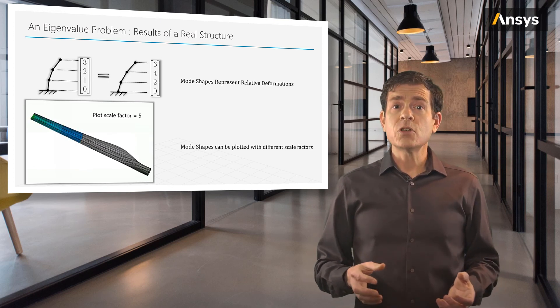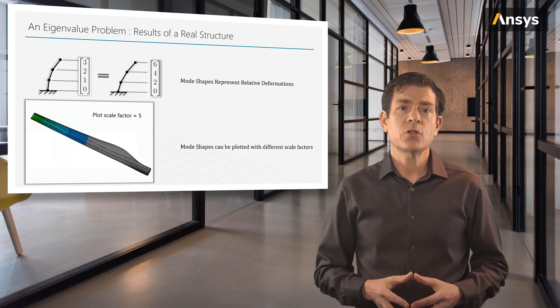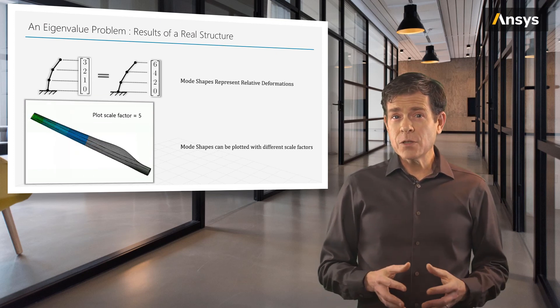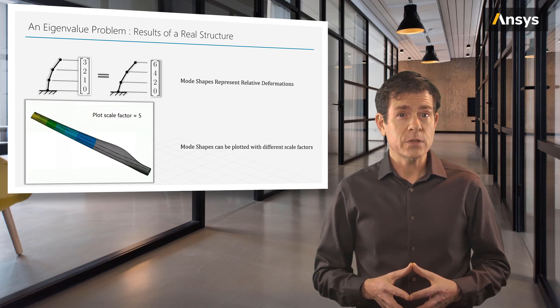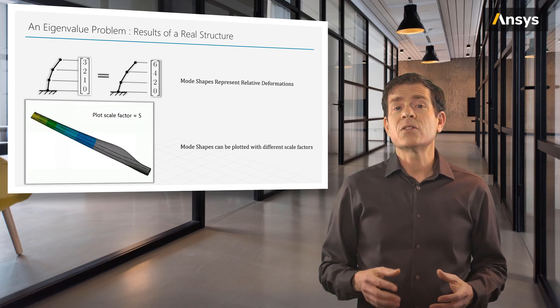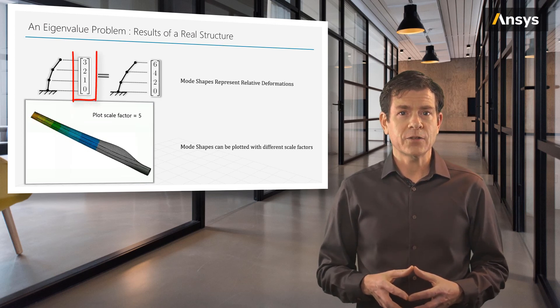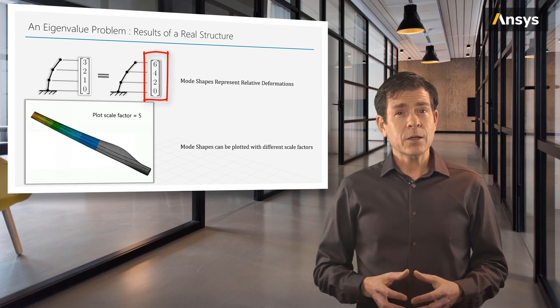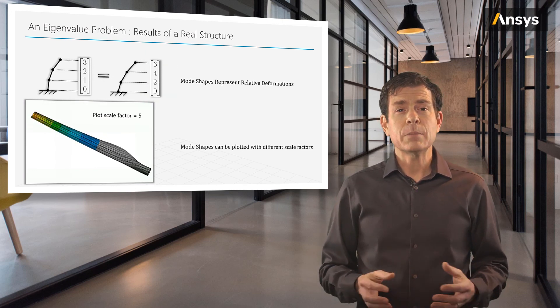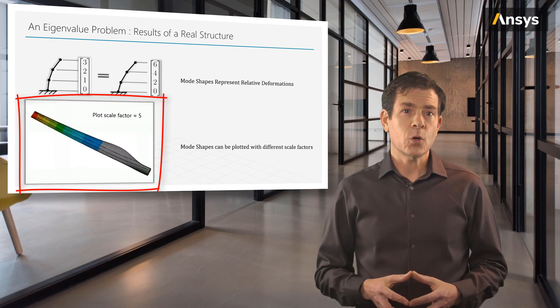For modal analysis, mode shapes 3210 and 6420 are the same mode shapes. Although the deformation plot seems different, the relative deformation is the same between the degrees of freedom. I can pick a single scalar number like 2 in this case, multiply it by the first vector, and that gives me the second vector. For a realistic modal analysis, mode shapes can be plotted in different scales, but still representing the same mode shape.